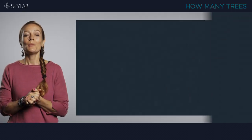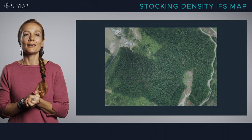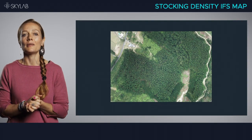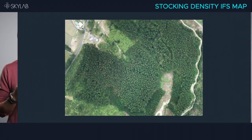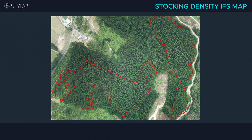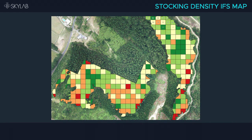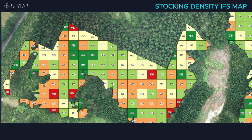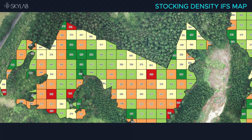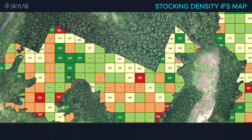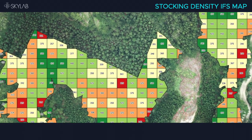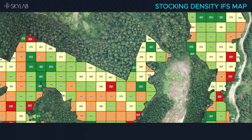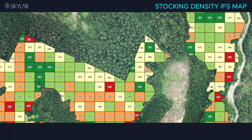We produce detailed stocking density maps that show exactly how many trees there are in each grid cell across the stand. The size of those grid cells can be customized, which is essential information for planning thinning and harvesting operations.